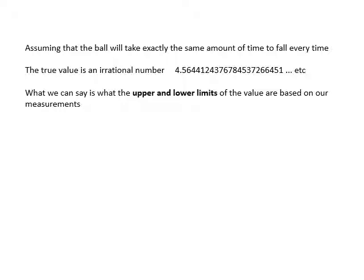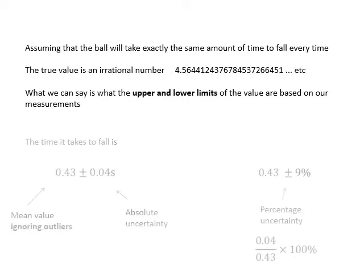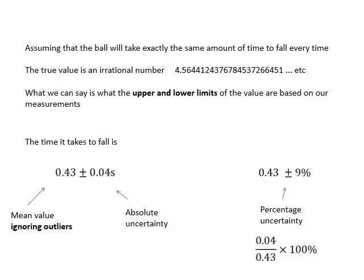We can say what the upper and lower limits are based on our measurements. If we know the upper and lower limits, we can come up with a value for the uncertainty. So the time it takes to fall is 0.43, which is the average - that's the mean value. The average value of our measurements was 0.43 plus or minus 0.04, and that's based on looking at the upper and lower limits.